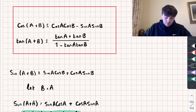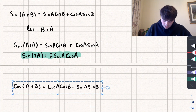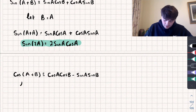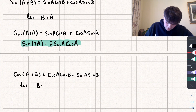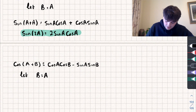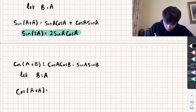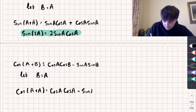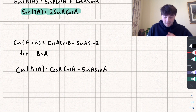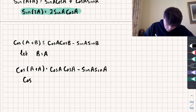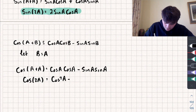Let's look at the next one. I'm going to do the exact same thing but this time using cosine of a plus b. Again, let b equal a, and we get cosine of a plus a, which is equal to cosine a times cosine a minus sine a times sine a. Simplifying this, we get that cosine of 2a is equal to cosine squared a minus sine squared a.